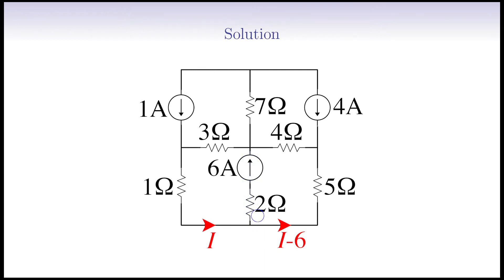We now move to the next node. I-6A is pumping the node from the bottom branch, and 4A is pumping the node from the upper branch by the current source. So, I-6, plus 4, should be leaving the node due to KCL. So, the current of this branch passing through the 4 ohm resistor is I-2.